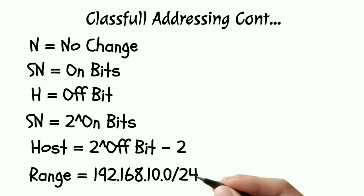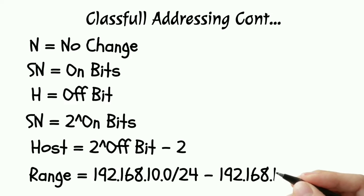CIDR for class C is slash 24 to slash 30.